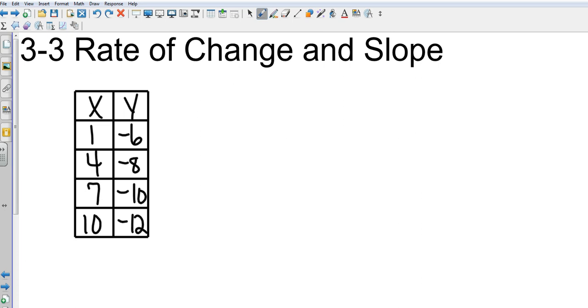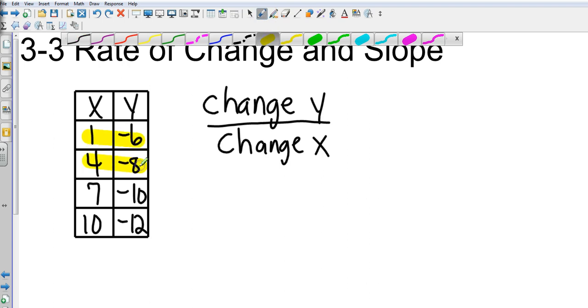Okay, to find out if there's a constant rate in change, we need to go change of y over change in x. And we're going to have to compare each individual instance. For example, let's start with this one and this one. So my change in y, it is from negative 6 minus the negative 8. And then my change in x is going to be 1 minus 4. So negative 6 minus the negative 8, change that to plus, negative 6 plus 8 is 2. 1 minus 4 is negative 3. So, so far, in my first example, my change of rate is negative 2 thirds or 2 over negative 3.